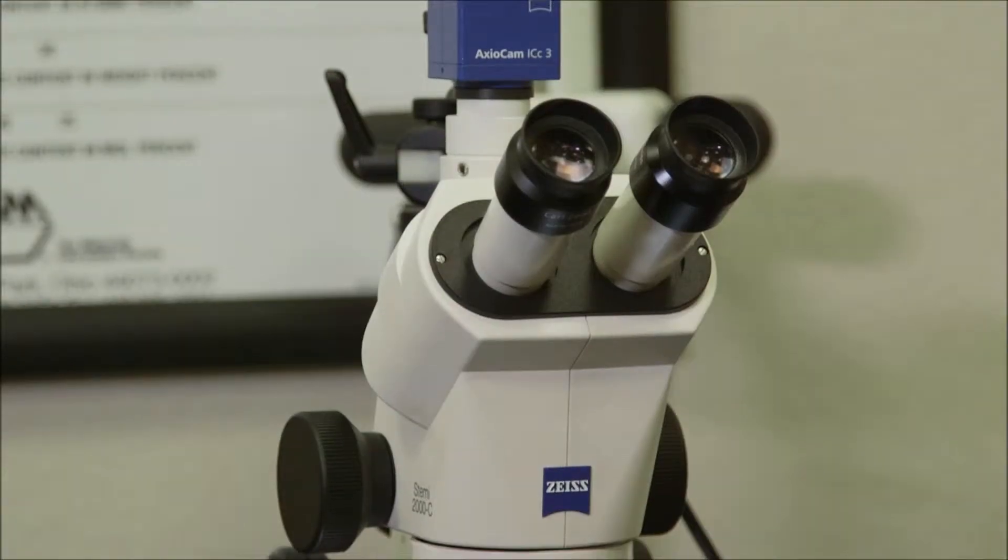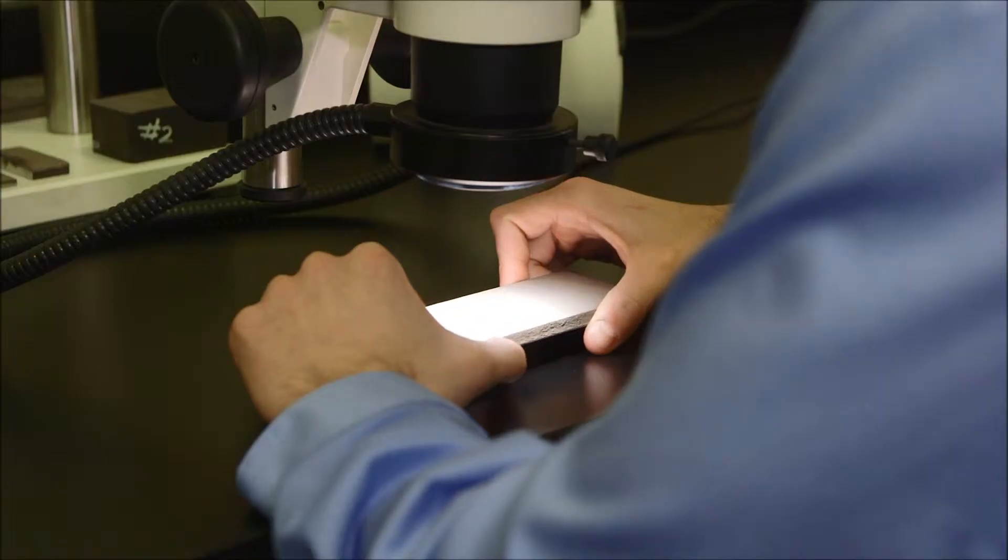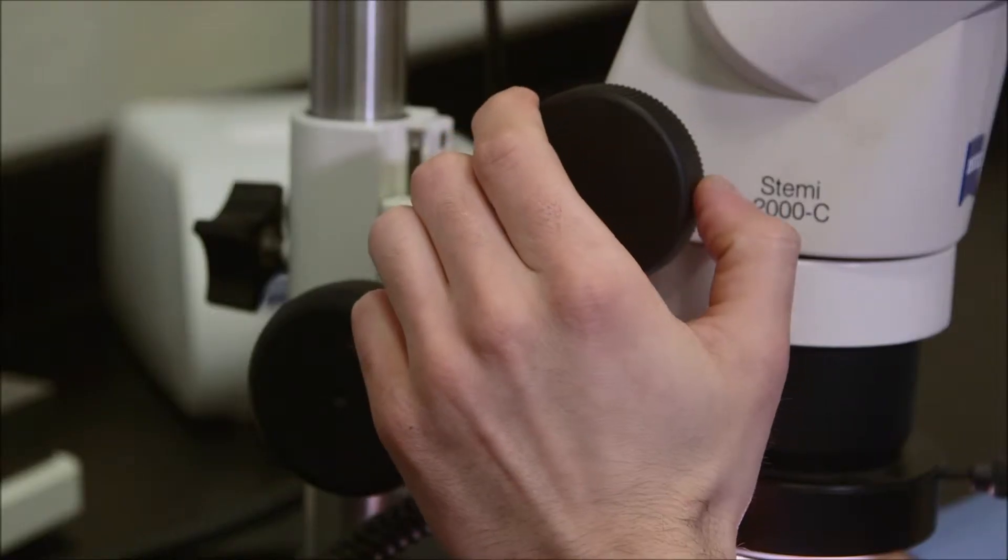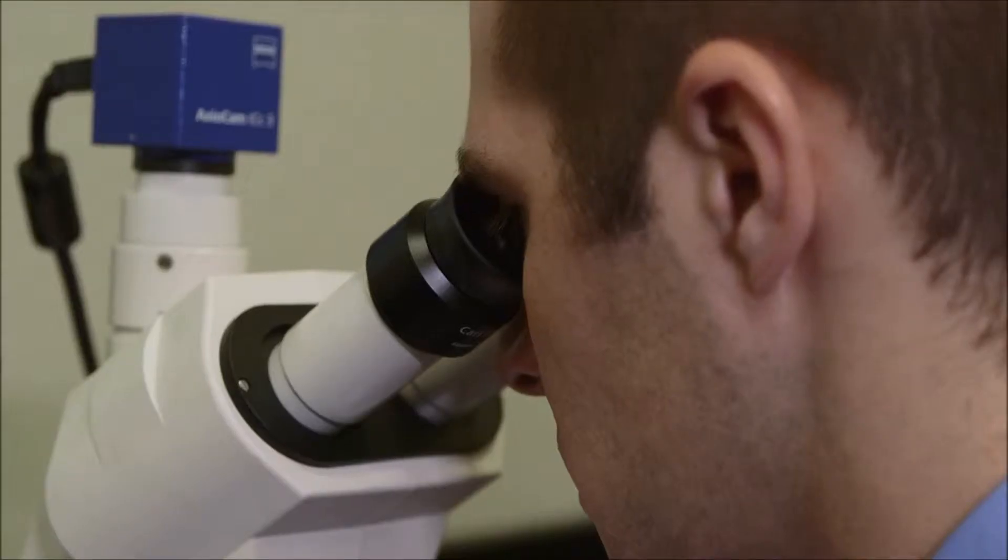Another very useful piece of equipment we have for performing failure analysis is a STEMI stereo microscope produced by Zeiss. And what this allows us to do, if we receive a component that comes in from the field that's failed, if we just want to get a nice look, it doesn't have to be very, very high magnification, but if we just want to put it underneath the microscope and get an idea on where the failure origin might have initiated.